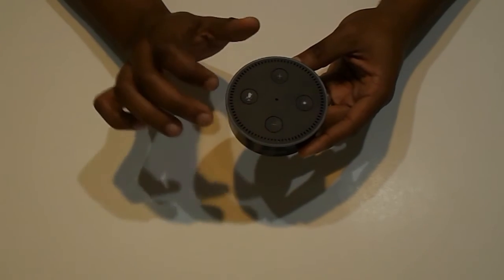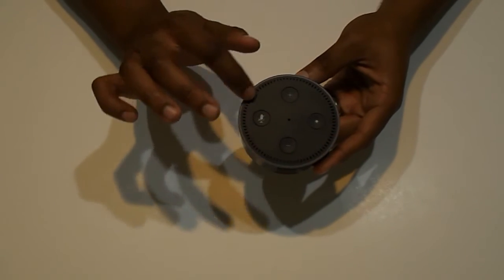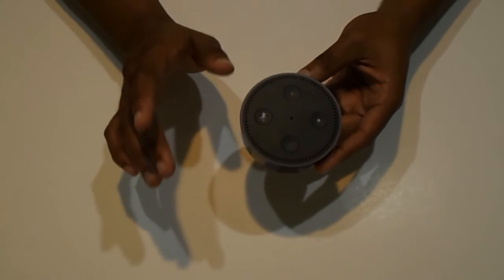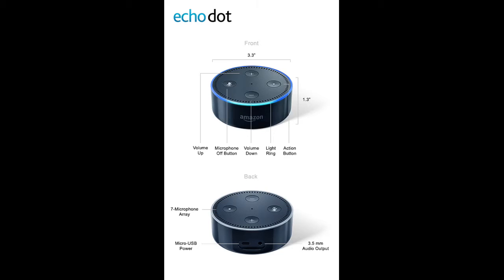In addition, you have your light wheel up here, which lights up when you alert Alexa that you need her assistance. You have your charger port right here and a 3.5 millimeter jack.